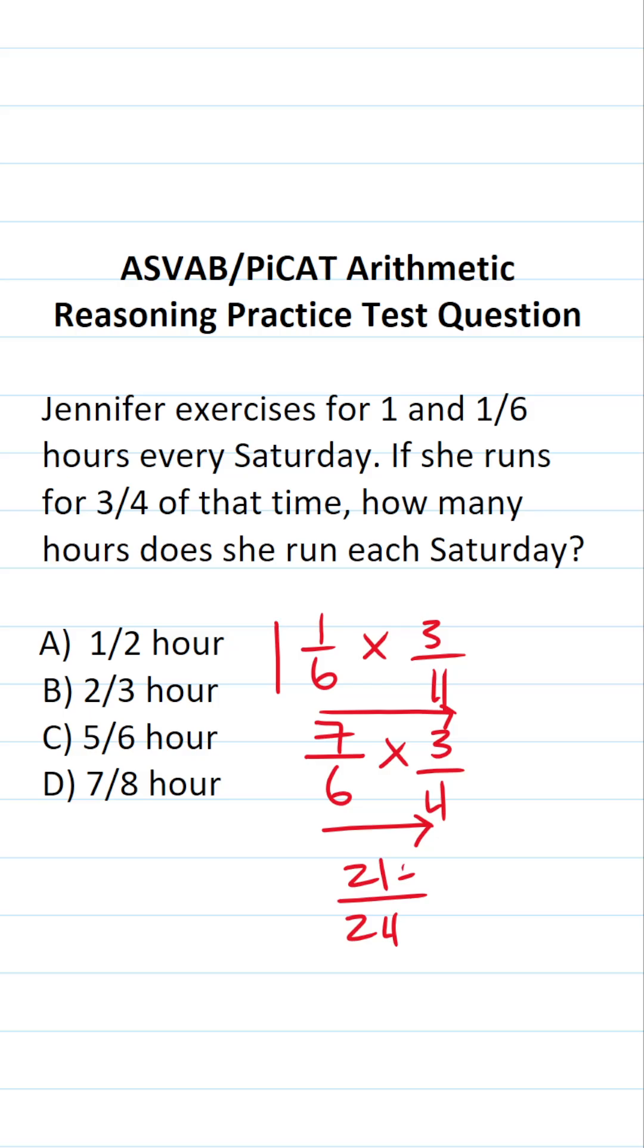We can reduce this by a common factor of three, of course. Twenty-one divided by three is seven. Twenty-four divided by three is eight.